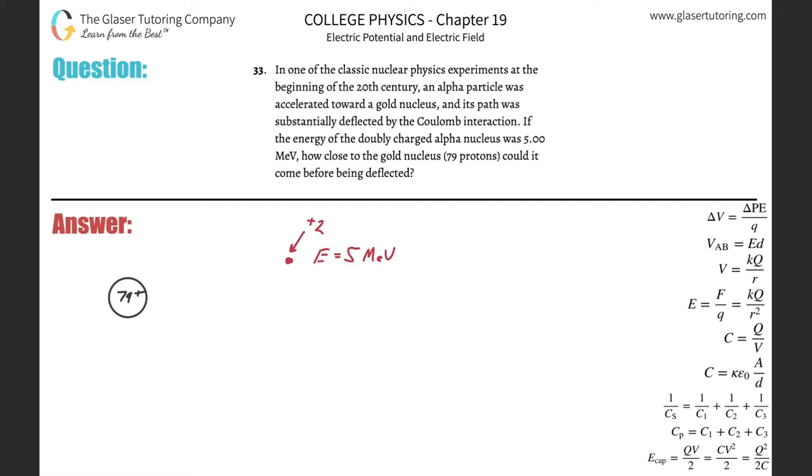Number 33. In one of the classic nuclear physics experiments at the beginning of the 20th century, an alpha particle was accelerated toward a gold nucleus and its path was substantially deflected by the Coulomb interaction. If the energy of the doubly charged alpha nucleus was 5 mega electron volts, how close to the gold nucleus, which had 79 protons, could it come before being deflected?